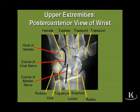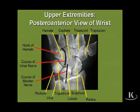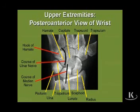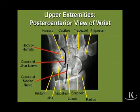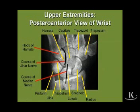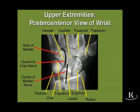Now, looking at the wrist, we have an important issue to talk about with regard to wrist injuries. This x-ray of the wrist gives a nice representation of how force gets transferred from the hand to the forearm. The major articulation between the hand and the forearm is between the scaphoid and the lunate with the radius. When forces are applied to the hand — such as falling on the outstretched hand — that force is transmitted across the scaphoid and lunate to the radius. The three bones most commonly injured by falling on the outstretched hand are the scaphoid, the lunate, and the radius.